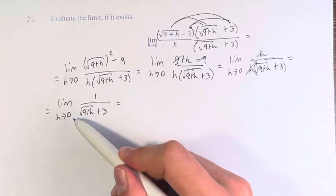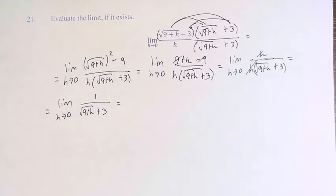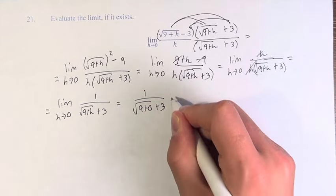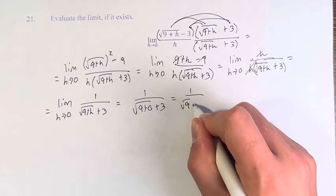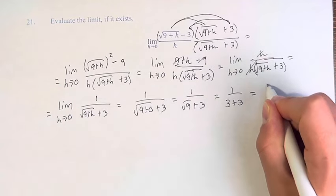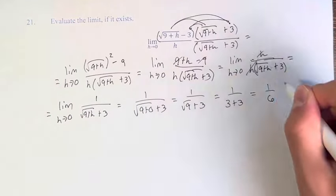Now we can plug 0 into this fraction without dividing by 0. So we have 1 over the square root of 9 plus 0 plus 3. 1 over the square root of 9 plus 3 is 1 over 3 plus 3, which is 1 over 6. So the value of this limit is 1 over 6.